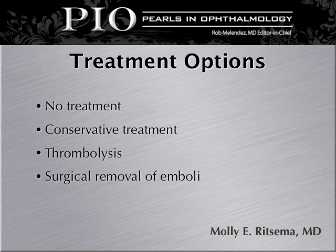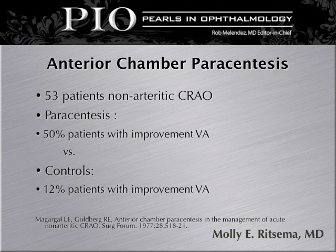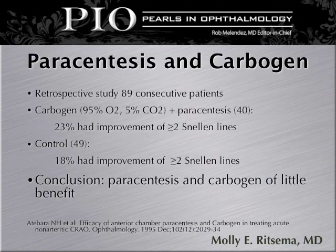Treatment options include no treatment, conservative treatment, thrombolysis, as well as surgical removal of the emboli. Regarding anterior chamber paracentesis, a study of 53 patients with non-arteritic CRAO who underwent paracentesis showed 50% of the patients had improvement in their visual acuity versus controls, which only had 12% improvement. Paracentesis and carbogen in combination was studied in a retrospective series of 89 consecutive patients; 23% had improvement greater than two lines on the eye chart versus 18% in the control. Conclusion: paracentesis and carbogen are of little benefit.